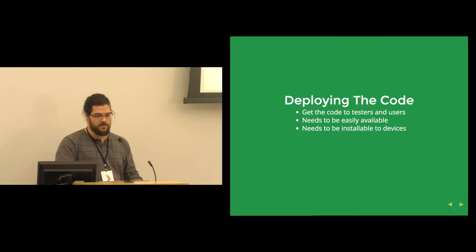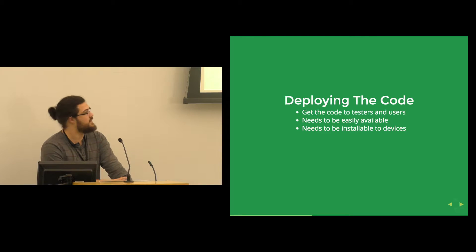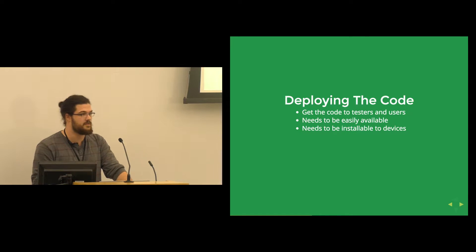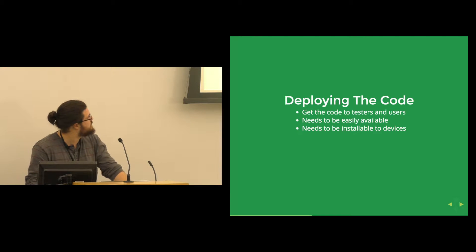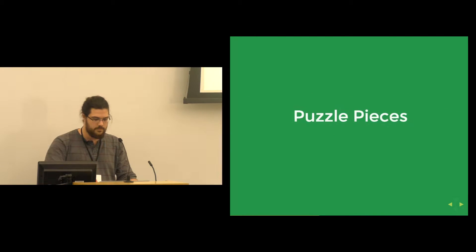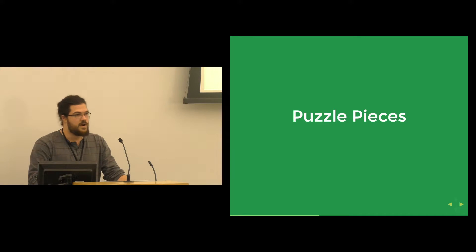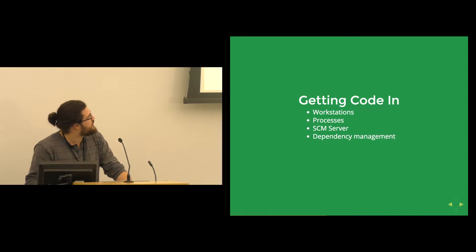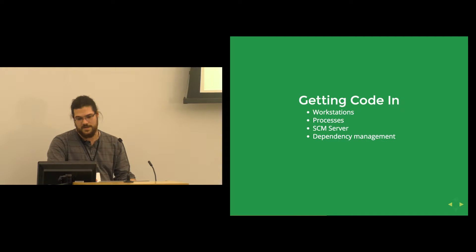Once we've built and tested our code and know it's good, we need to get the app into the hands of our testers or users. It needs to be easy for them to get — they don't want to hook up a phone to a computer and run something through Android Studio or Xcode to get the app onto their device. It should also be easy to run it on a real device, not just in a simulator or the Android emulator. This high-level overview of the CI and deployment process applies to any kind of application, not just mobile.